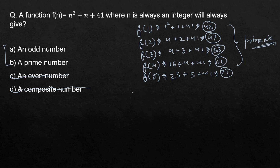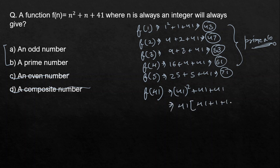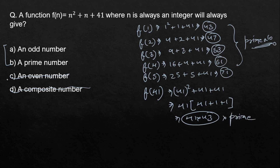However, if I put n = 41: f(41) = 41² + 41 + 41 = 41(41 + 1 + 1) = 41 × 43. Since this is a product of two prime numbers, it is composite — not prime. So f(n) does not always give a prime number.